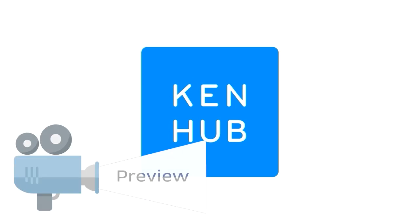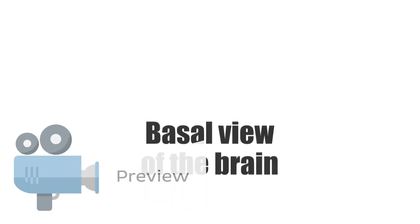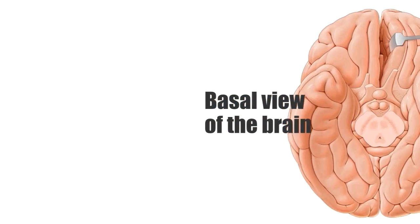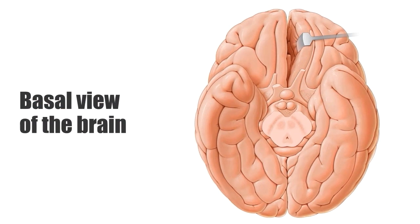Hello everyone, this is João from KenHub and welcome to another anatomy tutorial where this time we're going to be talking about the basal view of the brain. Essentially what we're going to be doing here is looking at the structures that can be seen when we look at the brain from an inferior aspect or the base of the brain, as you're seeing right now on this image on the screen. We will be highlighting and discussing the structures that are identifiable from this aspect and also talk a bit about their function.